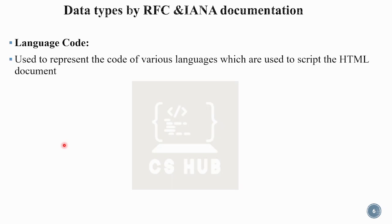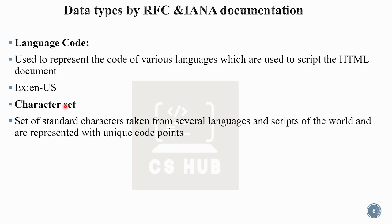Language code is used to represent the code of various languages used to script HTML documents. For example, in the US it is English. There are different language codes for different languages. Character set is a set of standard characters taken from several languages and scripts of the world, represented with unique code points. We can use characters from Chinese, English, and other languages. The character set includes dollar signs, symbols, lowercase and uppercase letters, exclamation marks, etc.